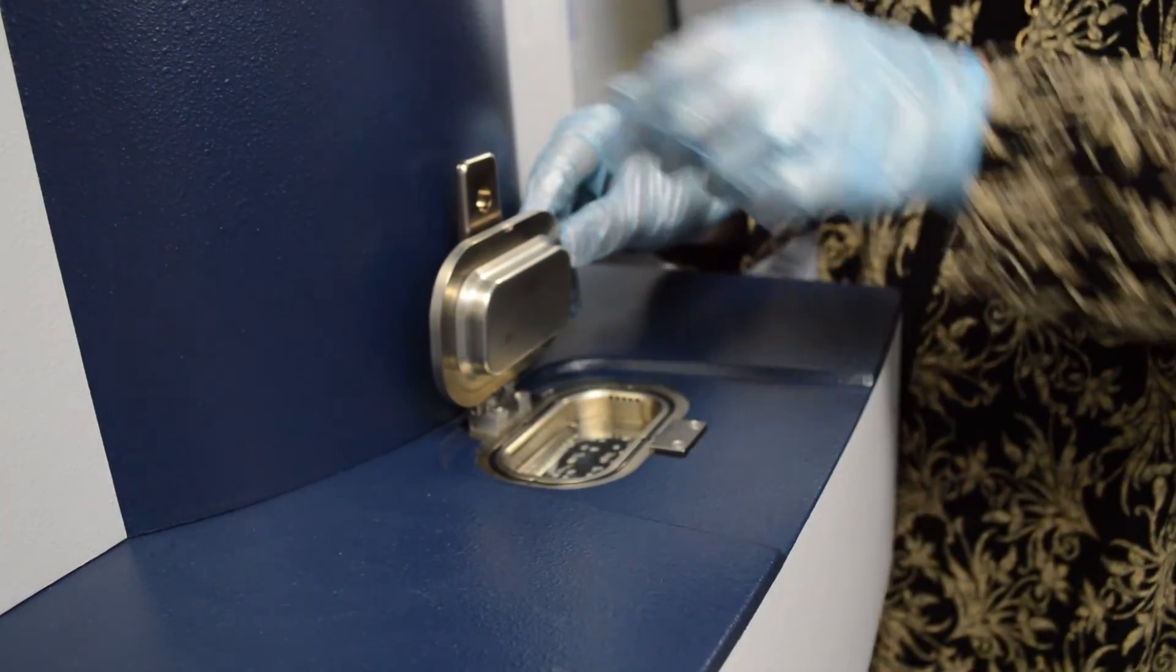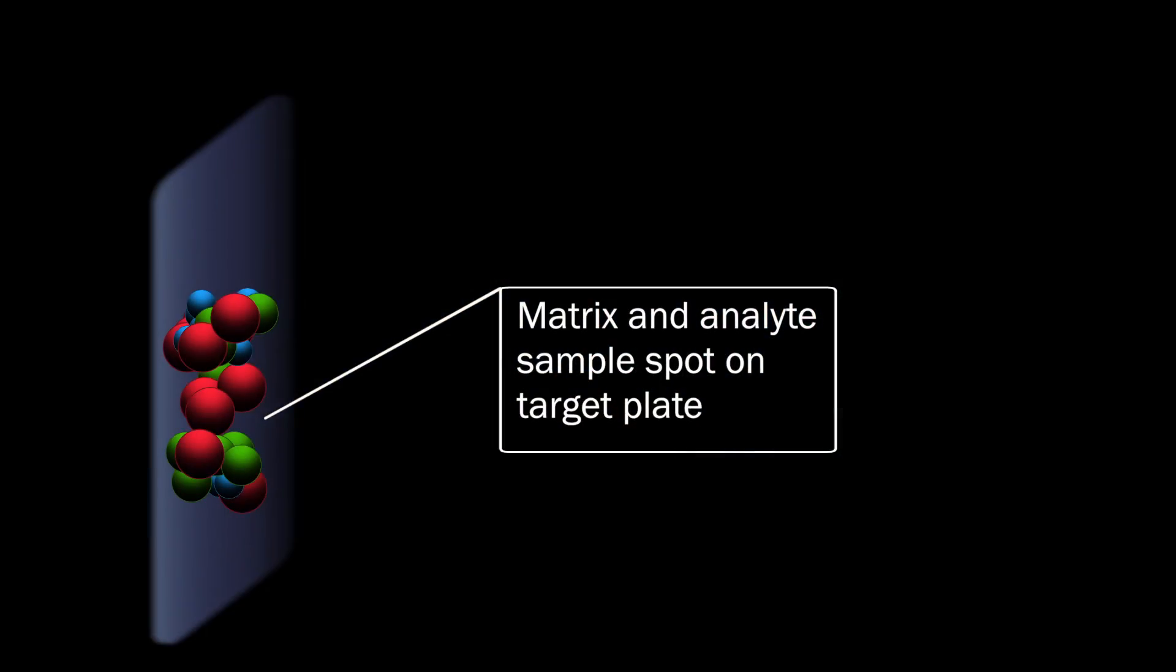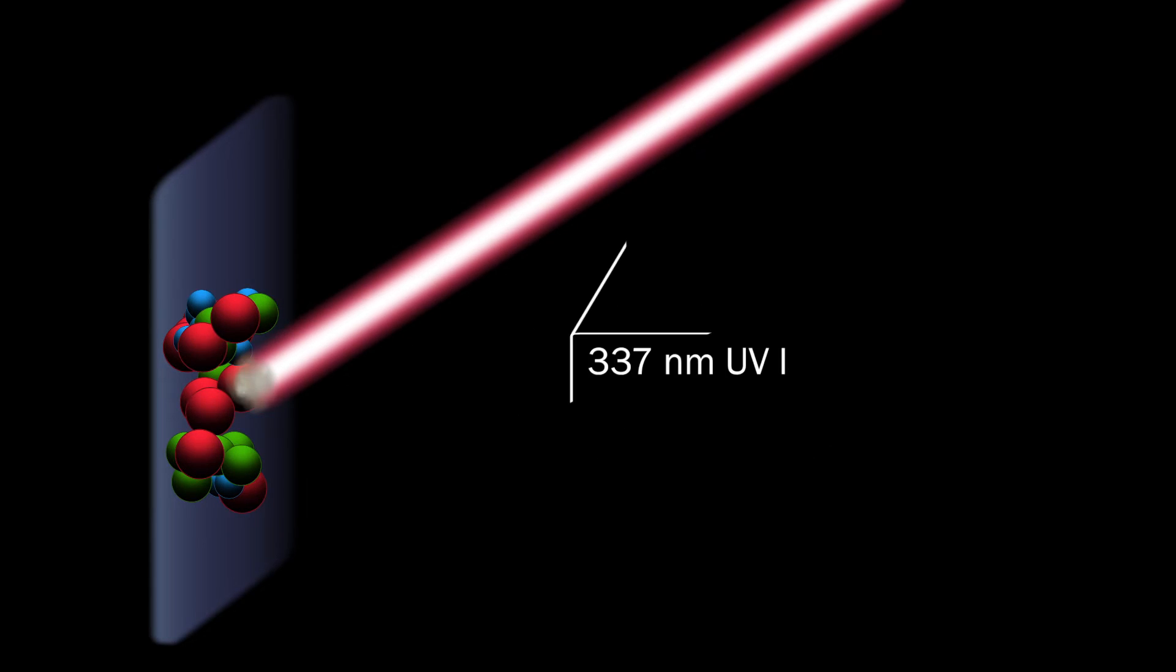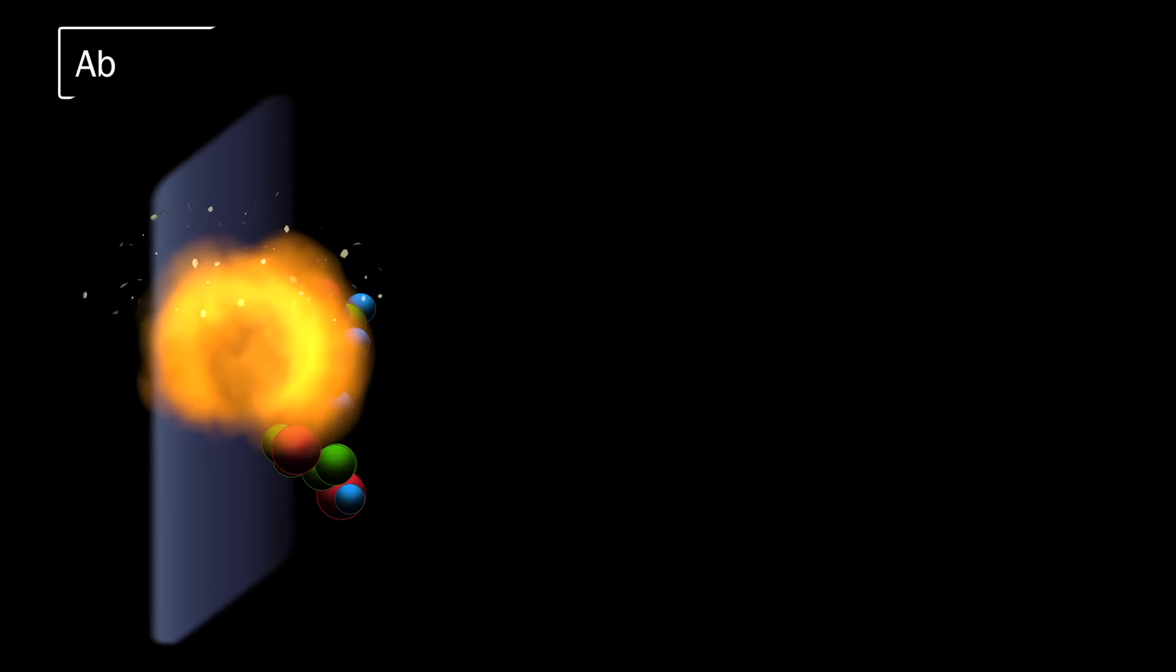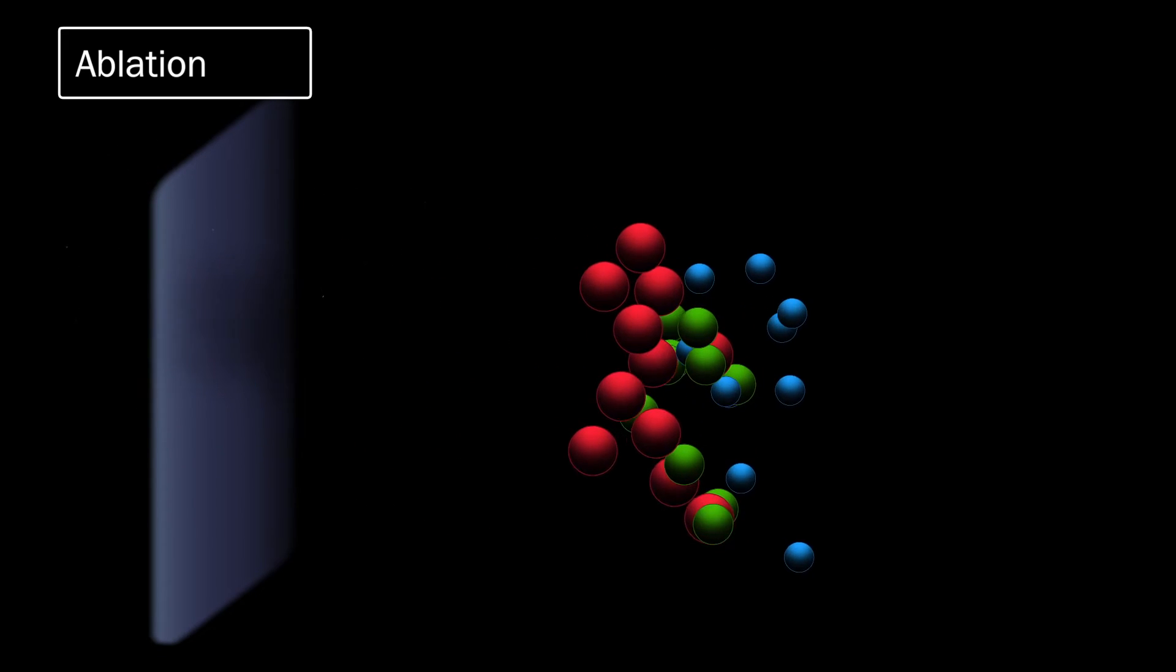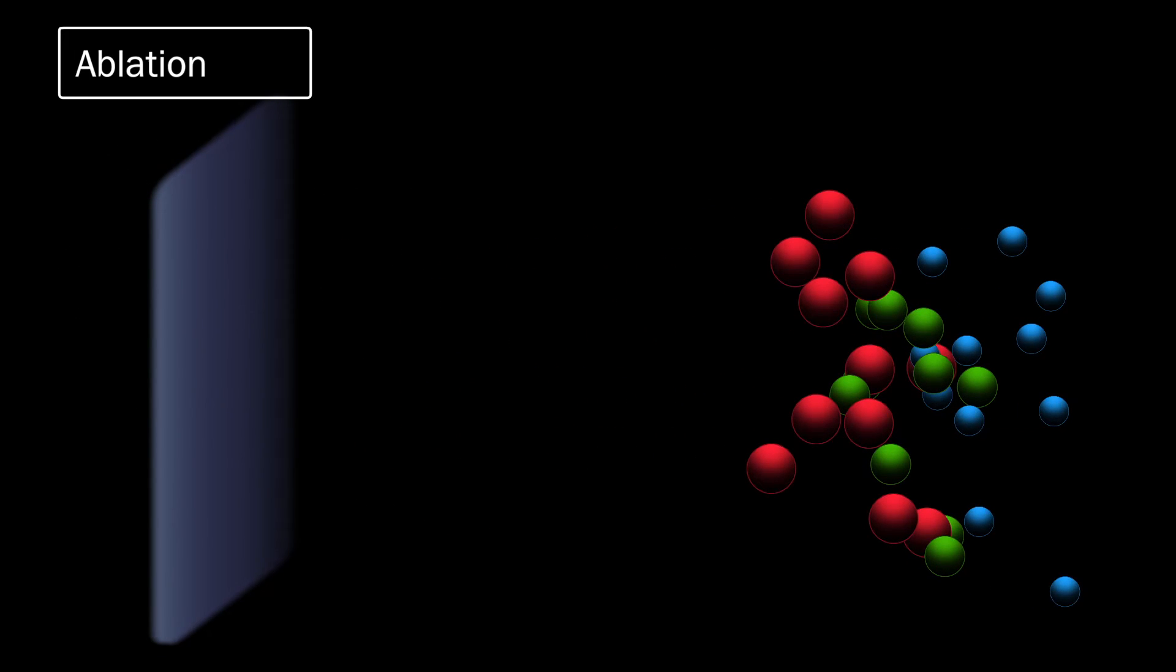Once inside the spectrometer, the target is brought into a vacuum and struck by a pulsed UV laser, usually at a wavelength of 337 nanometers. The laser energy is absorbed by the matrix molecules, which are energetically ablated from the surface of the sample, carrying the analyte molecules into the gas phase as well.